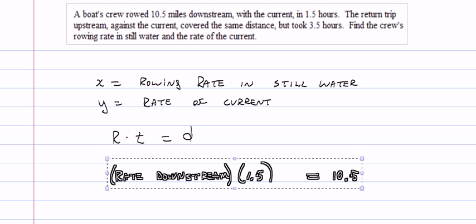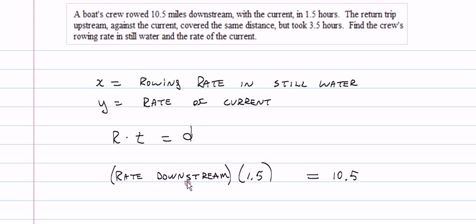So let's see what we have. We know that the rate that they row downstream, that's how fast they're traveling downstream, times the time it took them to go downstream, which they told us is 1.5 hours, is equal to the distance. They rowed 10.5 miles downstream.